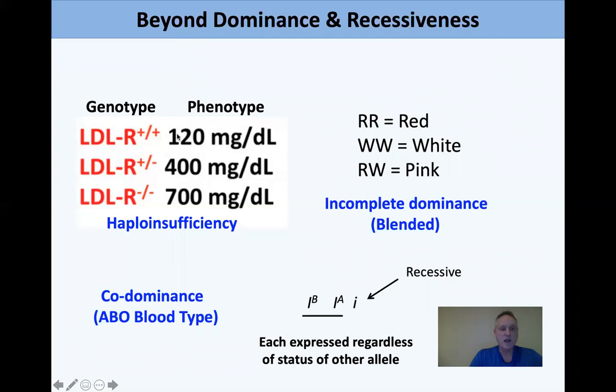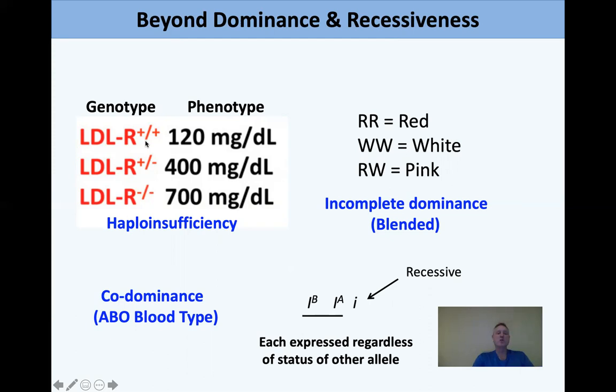The LDL receptor is involved in cholesterol metabolism and illustrates haploinsufficiency. A wild-type individual has cholesterol of 120, a heterozygous individual has 400 despite having a good copy of the receptor, and a homozygous recessive minus-minus individual has 700 — dangerously high. The fact that the heterozygous doesn't have the same phenotype as the plus-plus homozygous is known as haploinsufficiency.